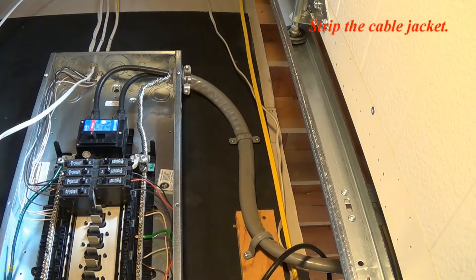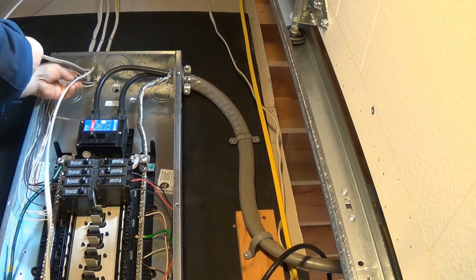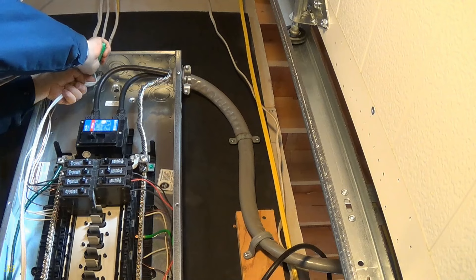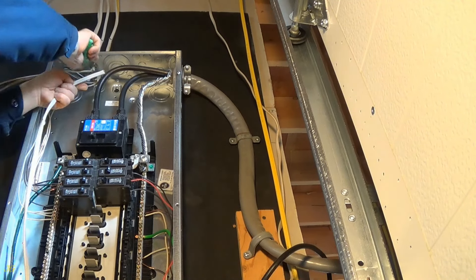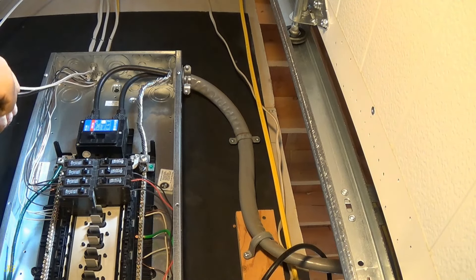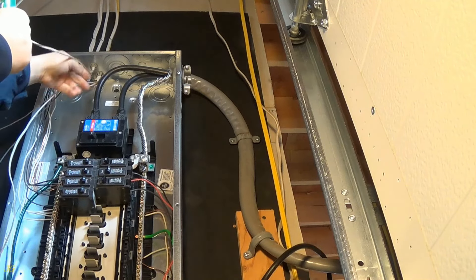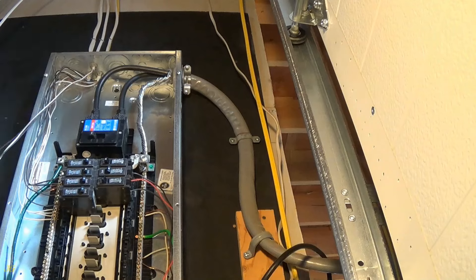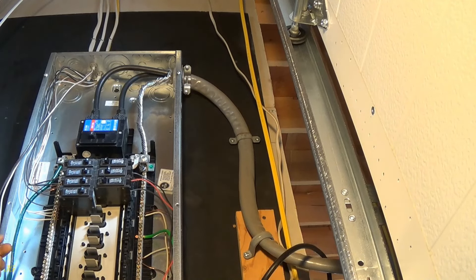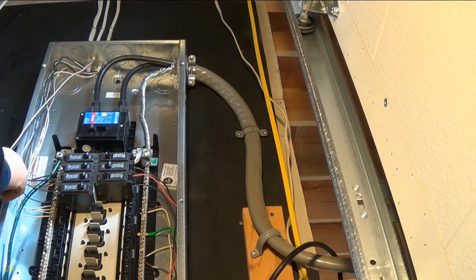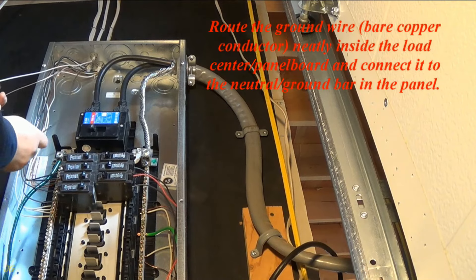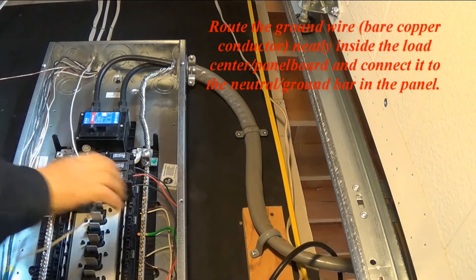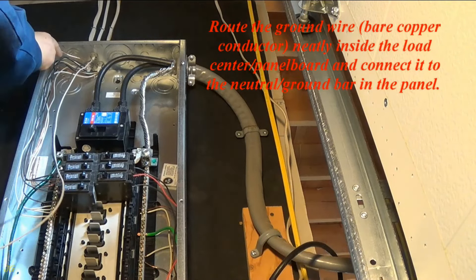Strip the cable jacket. Route the ground wire, bare copper conductor, neatly inside the load center panel board and connect it to the neutral ground bar in the panel.